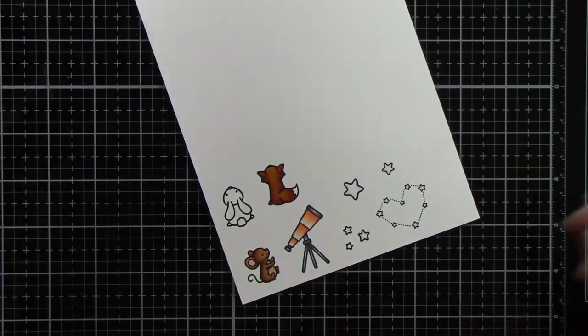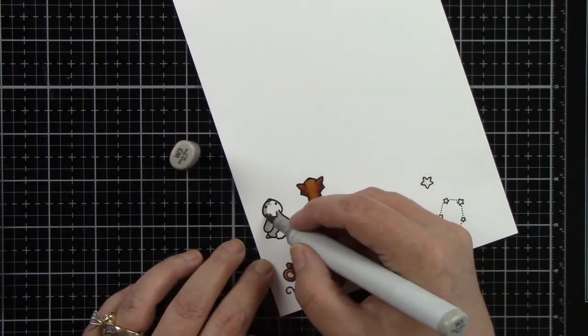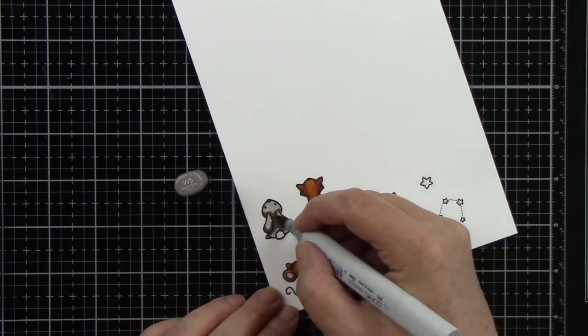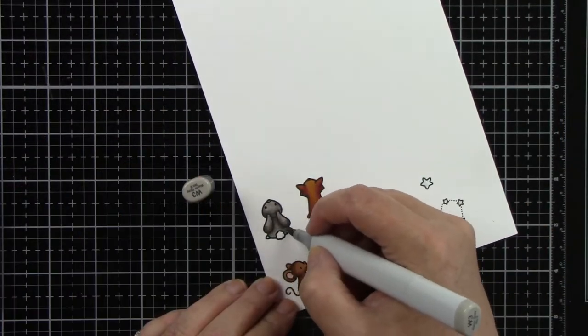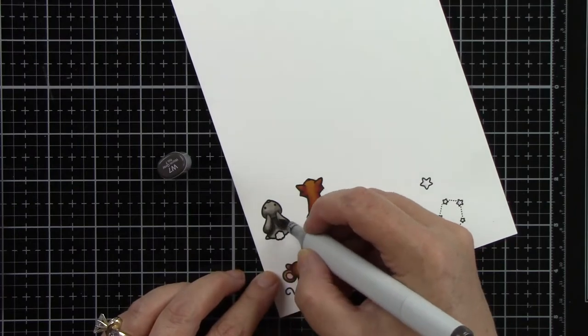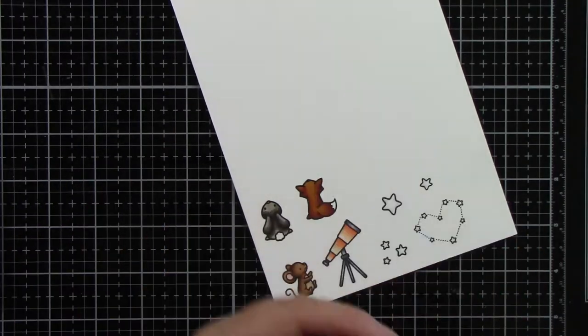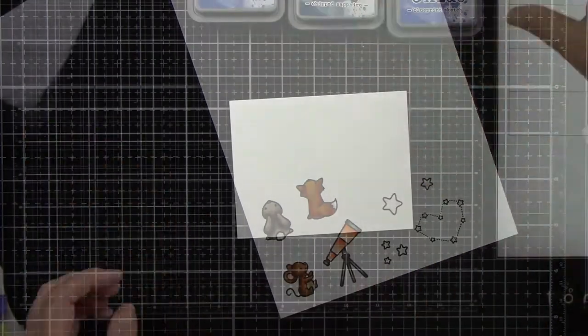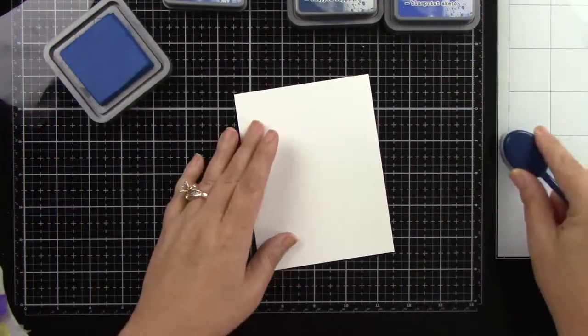I will use the coordinating dies to die cut out all of these images. Now like I said at the beginning of the video, I am using Chibitronics pressure sensitive conductive plastic. So when you press down on the battery, instead of all the lights coming on at one time, they kind of come on at a separate time, which is really fun for this card.